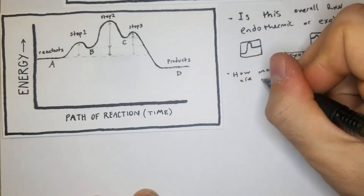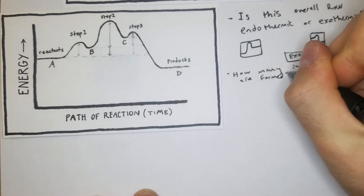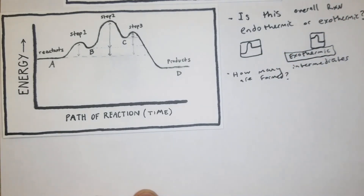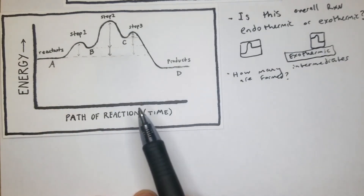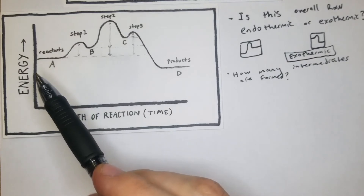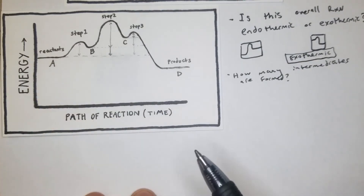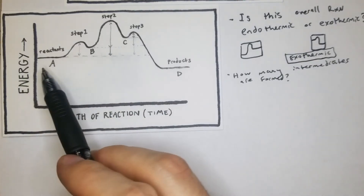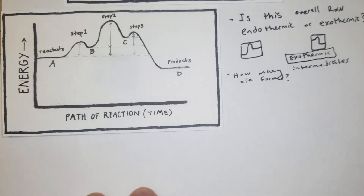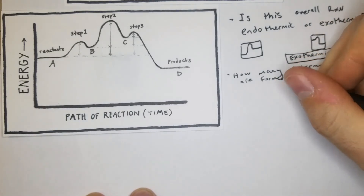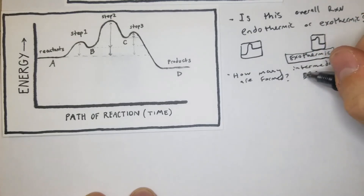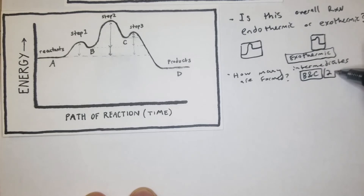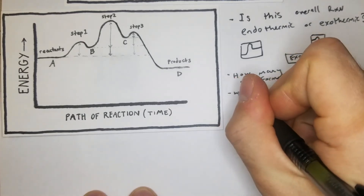Another question: how many intermediates are formed? We start with A and end with D. Since A is a single letter with no coefficient, we can assume it's unimolecular. In that case, B and C would be intermediates, so the answer is 2 intermediates.